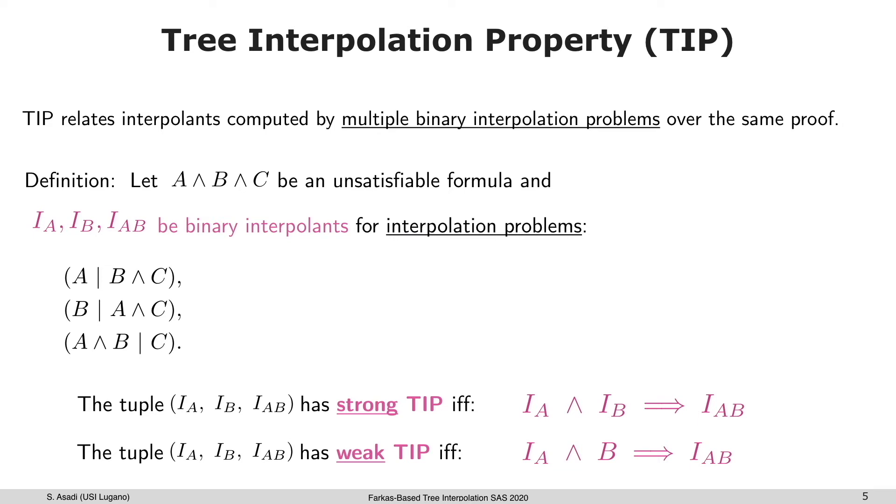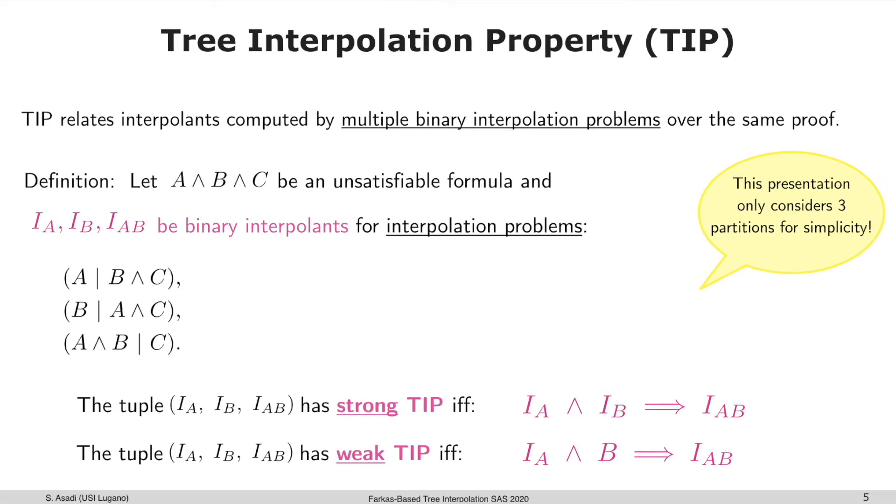Now let's look at tree interpolation property, TIP for short. The TIP relates interpolants computed by multiple binary interpolation problems over a single proof. Just as a heads up, this presentation only considers three partitions, but in the paper we consider any arbitrary partitions.